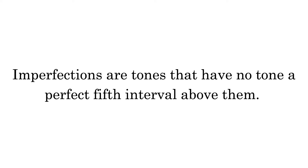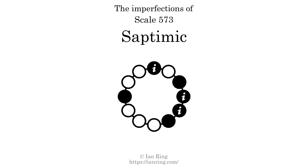Imperfections are tones that have no tone a perfect fifth interval above them. This scale has 3 imperfections. They are at positions here, here, and here.